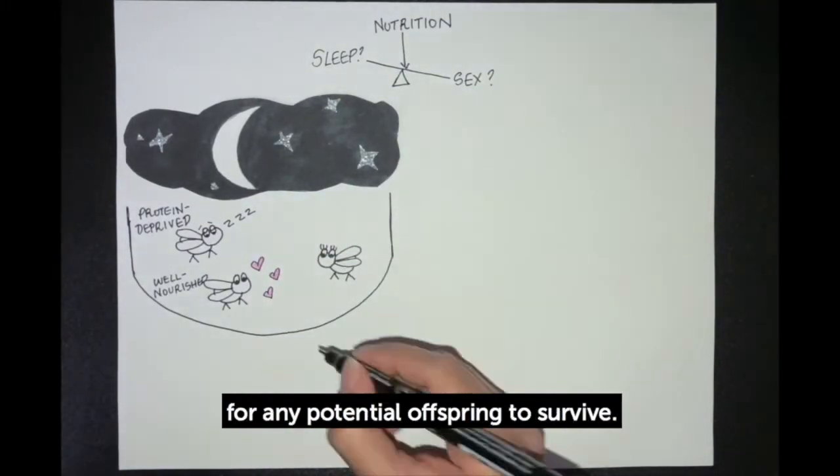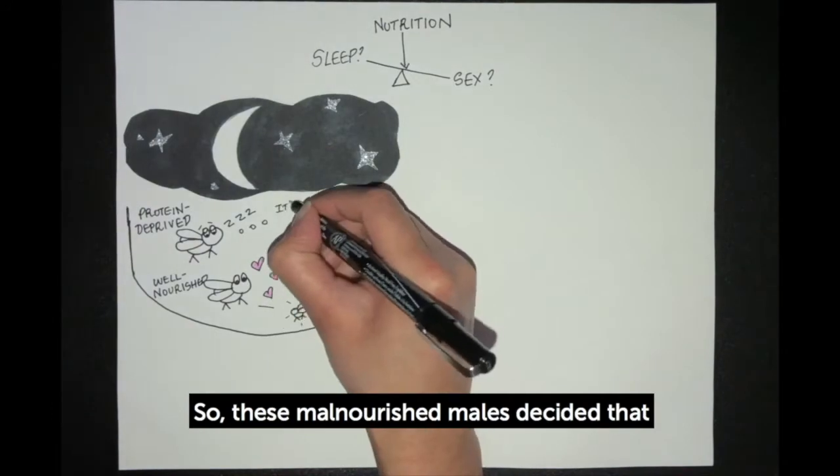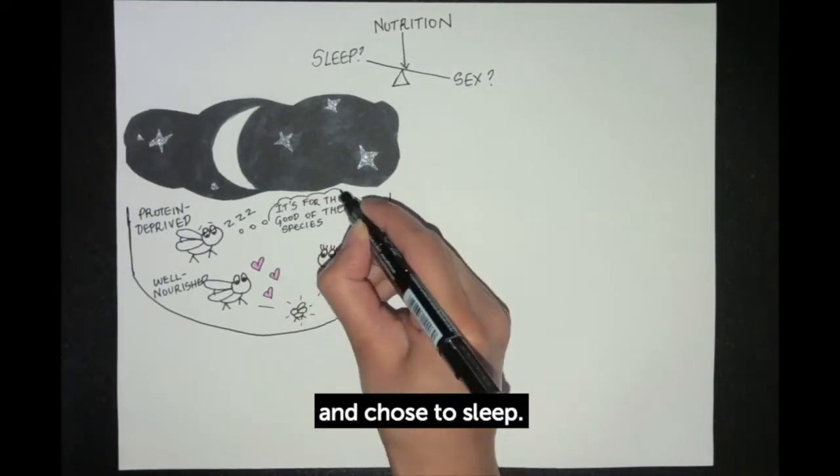Turns out protein is necessary for any potential offspring to survive, so these malnourished males decided that mating was less likely to be successful, and chose to sleep.